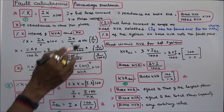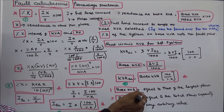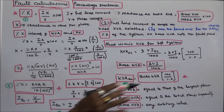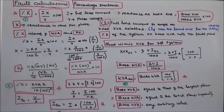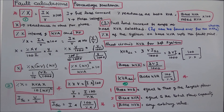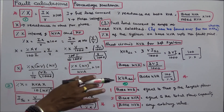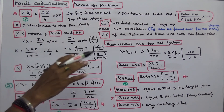To select a base KVA, there are three options. First, base KVA can equal that of the largest plant. Second, base KVA can equal the total plant capacity. Third, base KVA can be any arbitrary value. Using these methods, we calculate percentage reactance, which is very useful for finding short circuit current and short circuit KVA.